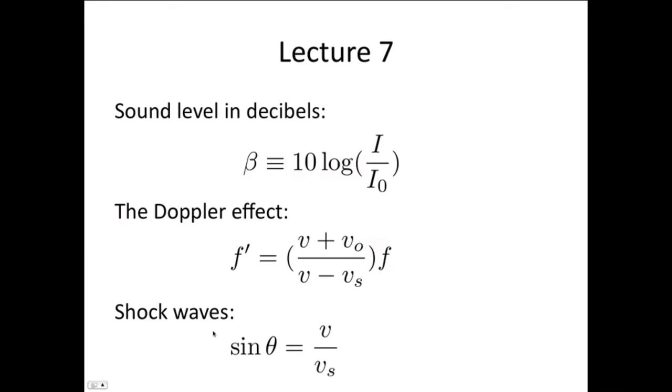We saw that when a source started to move faster than waves could travel in that medium, then we got shock waves generated. And sin θ, the angle or half the angle that the shock waves make, is given by v/v_s, where v is the velocity of waves in that medium, and v_s is the velocity of the source. The Mach number equals v_s/v.